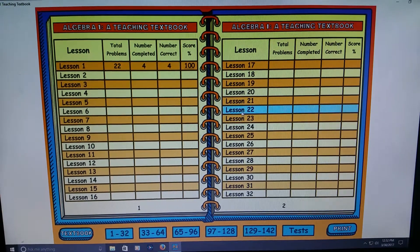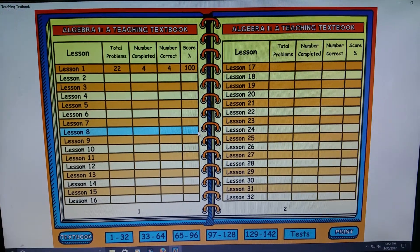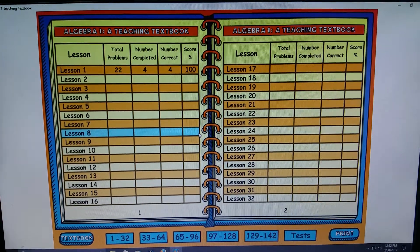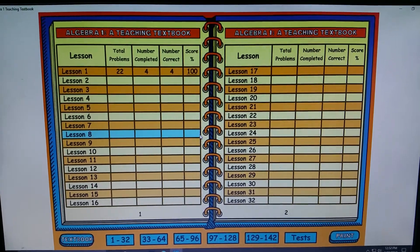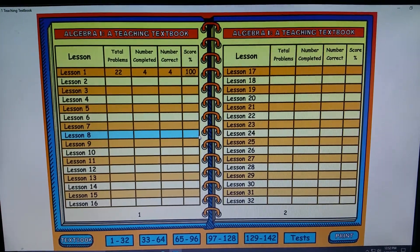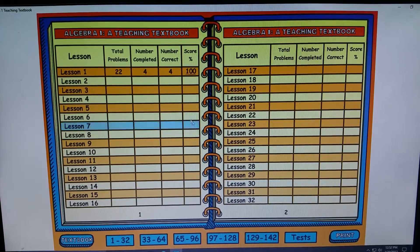So it shows you the total problems that there were, how many they completed, the number they got right, and their score. So it automatically grades for you, which is so nice because then at the end of the year you can calculate their grade point average and everything that you can add in, especially if you're doing this for high school for freshmen. When you're keeping track of points and credits and everything, you could do that.